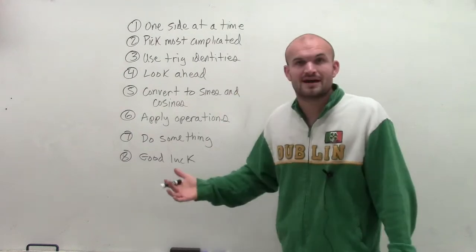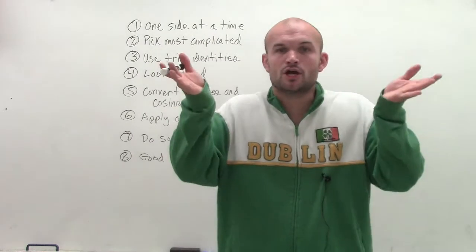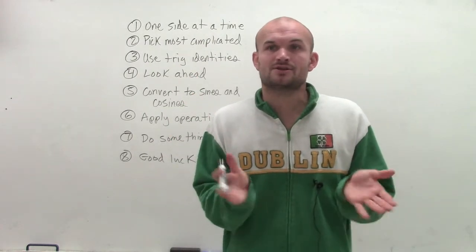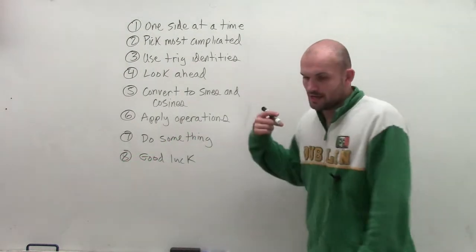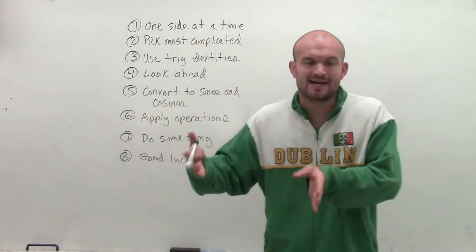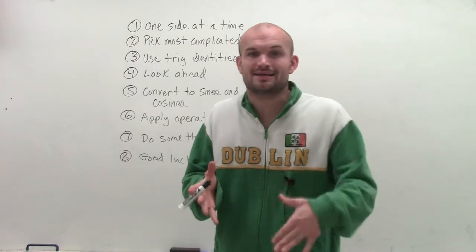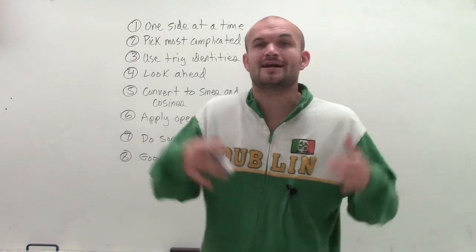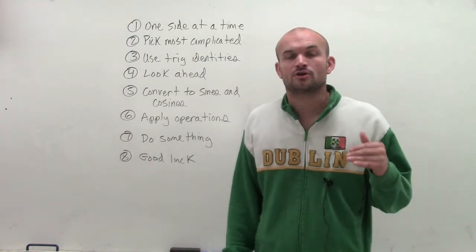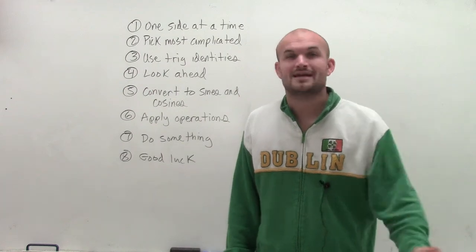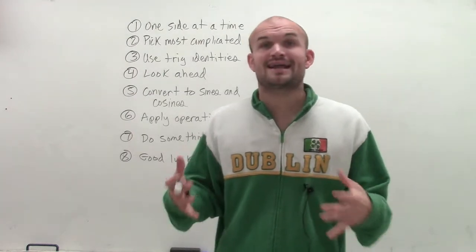Since you're going to be simplifying, if one side is more complicated than the other, that's the side you want to simplify — because you're working it down to a more simplified answer, which should hopefully look like your other, simpler side. Once you've picked the most complicated side to work on, you have to know those trig identities. It's really important that you have these trig identities written down, because you're going to be using them a lot.